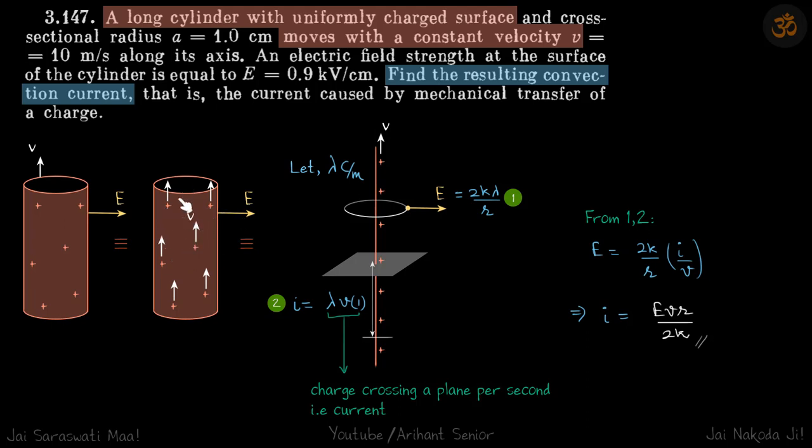If charges are moving because the electric field is given on the periphery of the surface, let's bring all these charges in the center. Now all these charges will be on a wire and these charges are now moving with the same velocity V as the original cylinder.